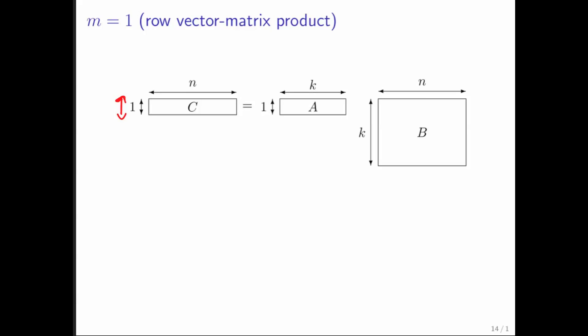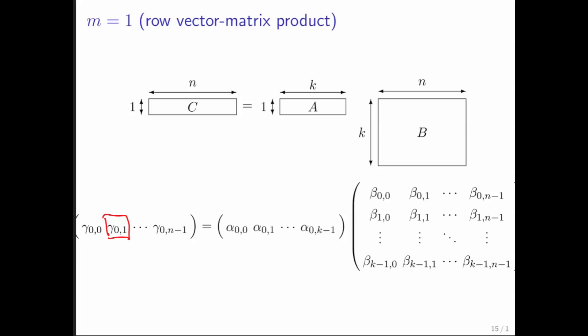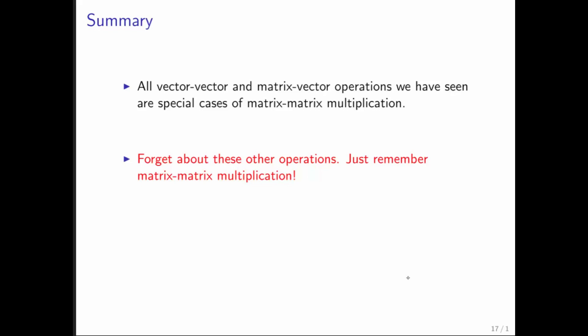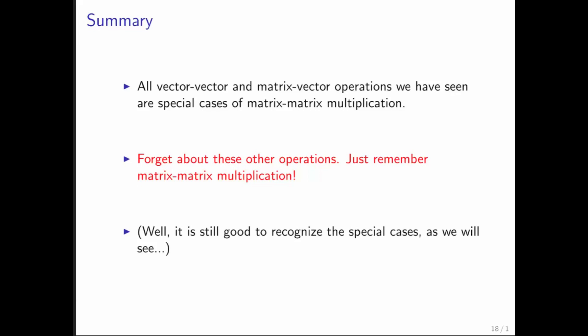Finally, there's the special case where you compute a row vector by multiplying a row vector times a matrix — that's m equal to 1. A typical entry in that row is computed as the dot product of the one row with the corresponding column. All vector-vector and matrix-vector operations we've seen before are just special cases of matrix-matrix multiplication, so you don't have to remember everything from the first three weeks — you just have to remember how to do a matrix-matrix multiply. We already saw how matrix-matrix multiplication can be thought of as matrix-vector multiplication with individual columns, and we'll use that as we design algorithms and go forward with linear algebra theory.